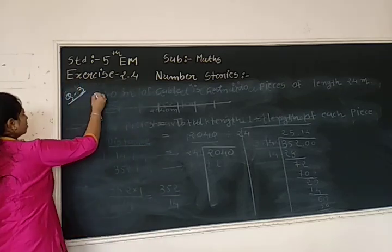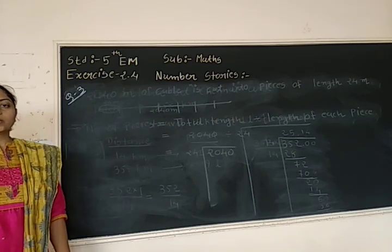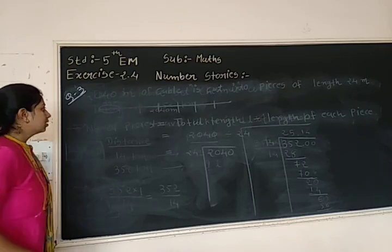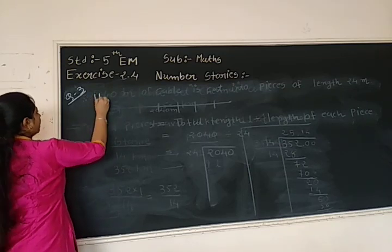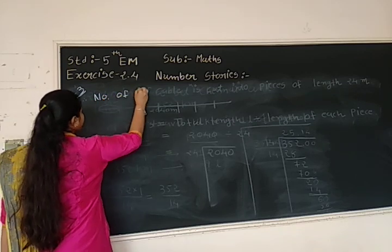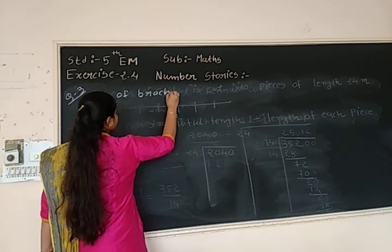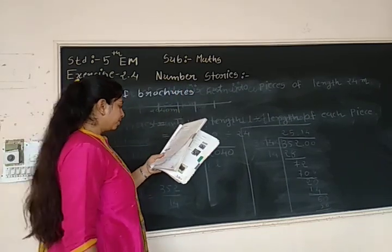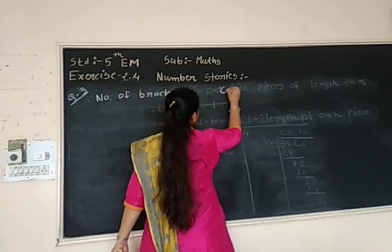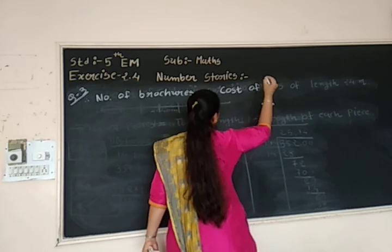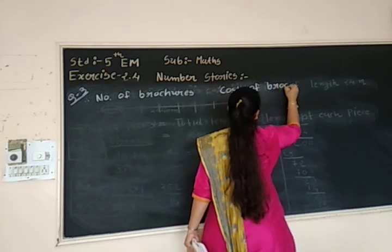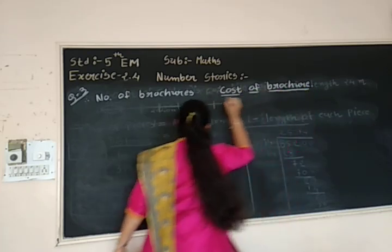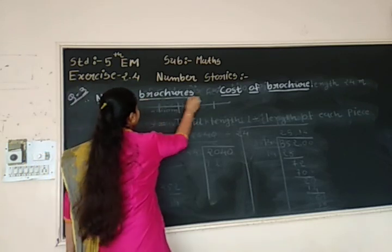First one is number of brochures and second one is the cost of brochure. So here we have to write like cost sum. Whatever we have to take in our cost sum, the cost distance that way we will write. Clear? What is that? Number of brochures and another thing is cost. Cost of brochure. Cost of brochure and number of brochures.